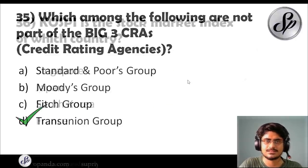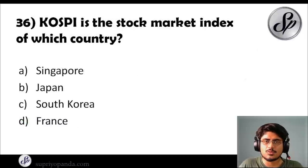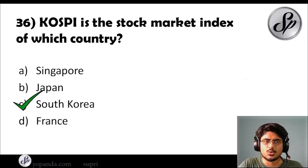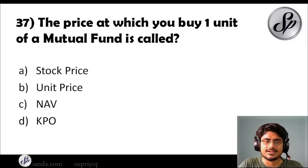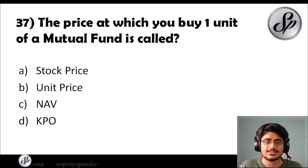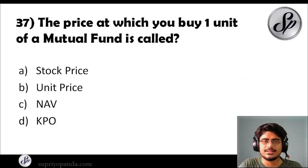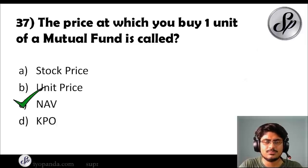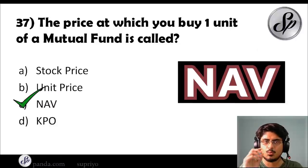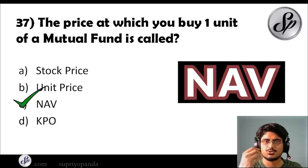Question thirty-six: KOSPI is the stock market index of which country? The answer is South Korea. Question thirty-seven: the price at which you buy one unit of a mutual fund is called what? The answer is NAV — Net Asset Value. Remember that the price of one unit of a mutual fund is the net asset value of that fund.